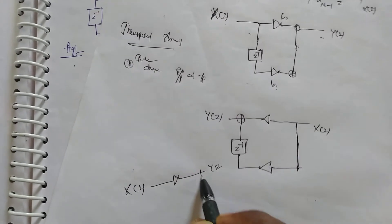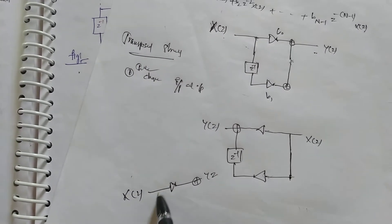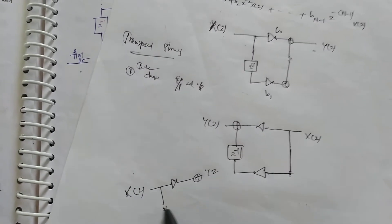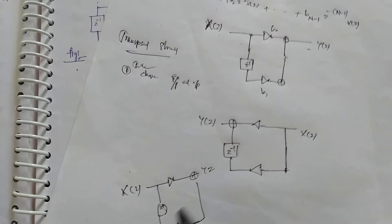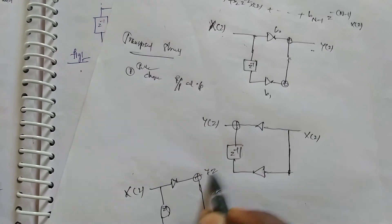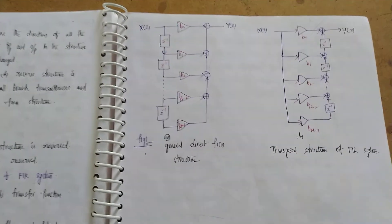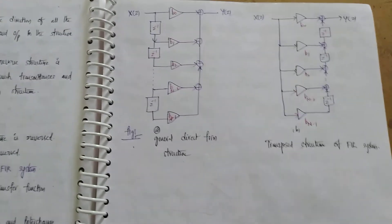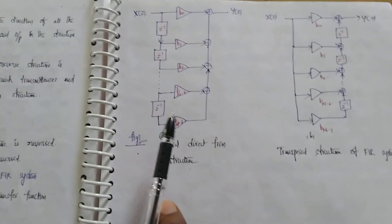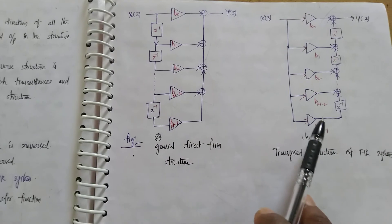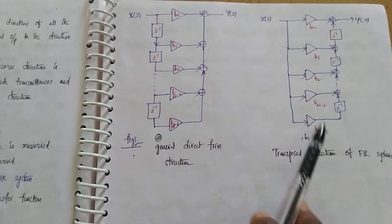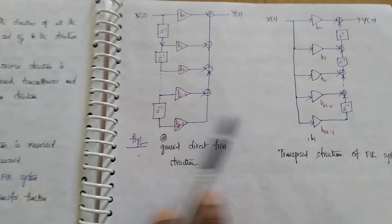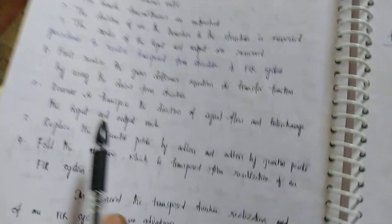So y(z), some adder, some delay component, and b1 — this is similar to the previous form. That is the main concept: in the transposed structure of the direct form one structure, we obtain the transposed structure by interchanging the input as well as the output.